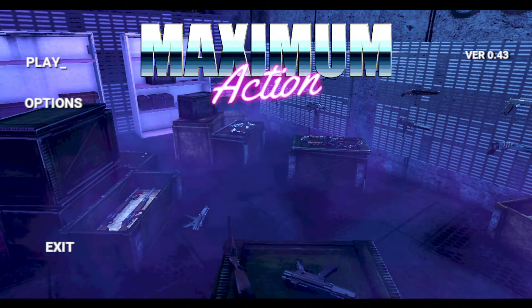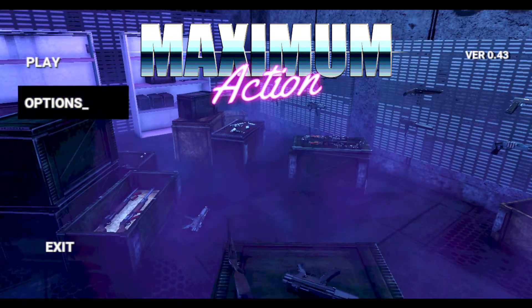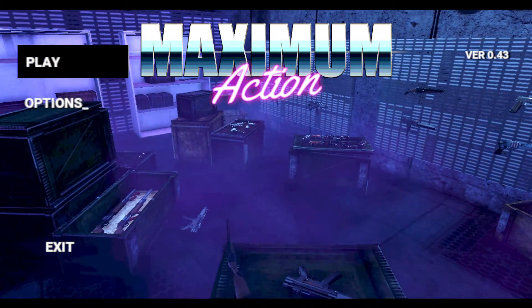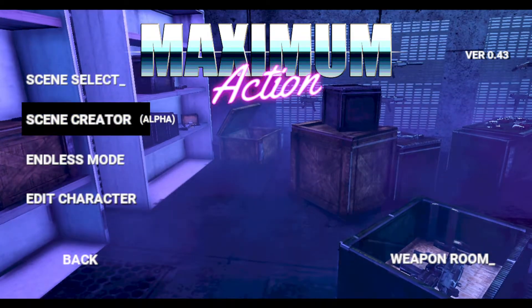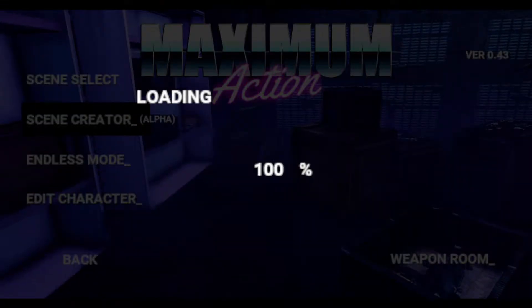We're going to do basically the same thing we did last time. Go to the main menu, click Play, and go to the Scene Creator. We're on update 4.3, so we're going to create a scene. You've got all these different options — endless modes and stuff work pretty well now, so you can effectively make arenas.